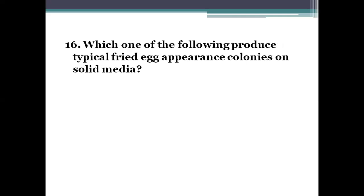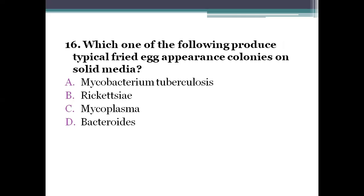Next question: which of the following produces typical fried egg appearance colonies on solid media? Option A, Mycobacterium tuberculosis. Option B, Rickettsia. Option C, Mycoplasma. Option D, bacterial cell. The right answer is Mycoplasma — in case of Mycoplasma, we can see the fried egg appearance colonies on solid media.